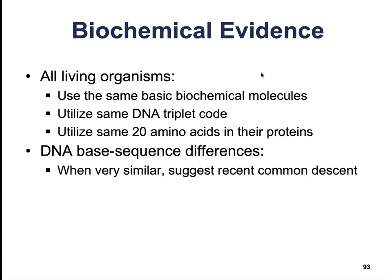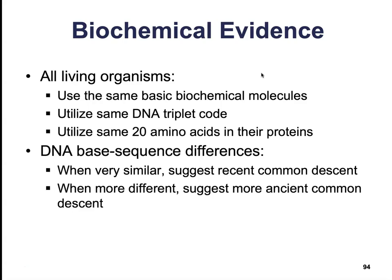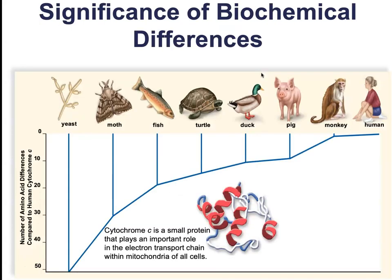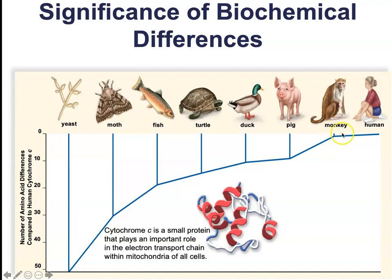There are also DNA base sequence differences. When sequences are similar, it suggests recent common descent; when more different, it suggests more ancient common descent. For example, cytochrome C — a protein that plays an important role in the electron transport chain within the mitochondria of all cells — is used by every living organism, from yeast to humans. However, the shape and structure of cytochrome C varies from species to species. It is most similar between humans and monkeys, with pigs not far behind, and shows greater differences as we branch further away in the amino acid sequence.